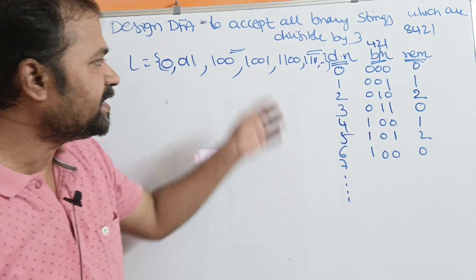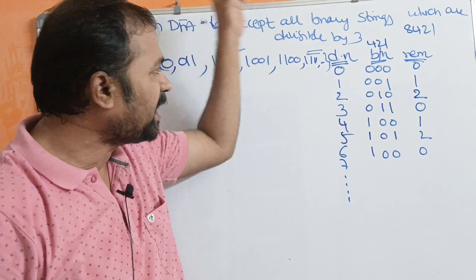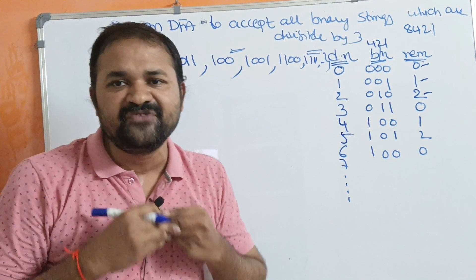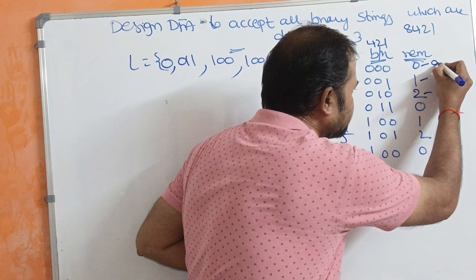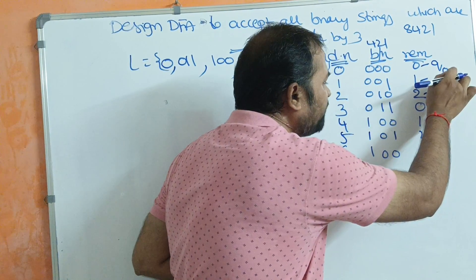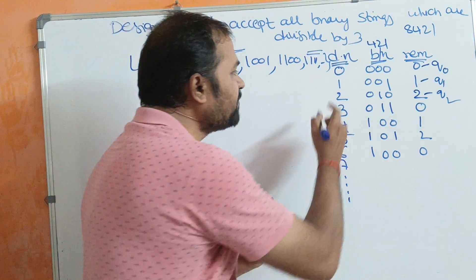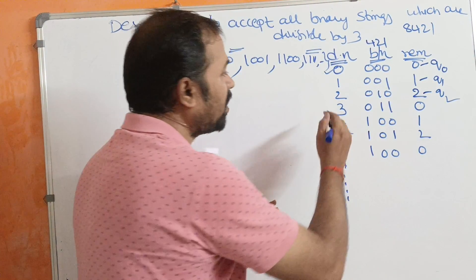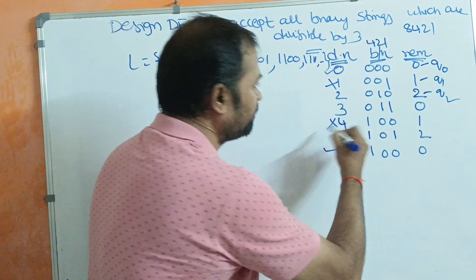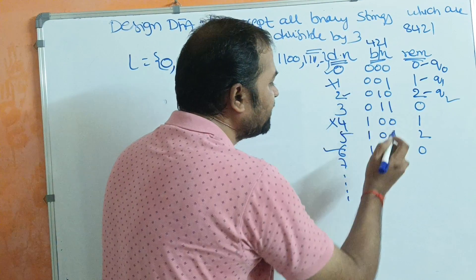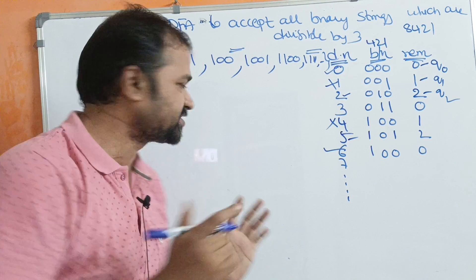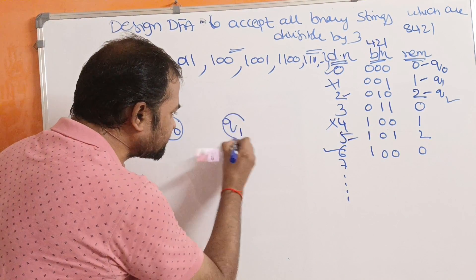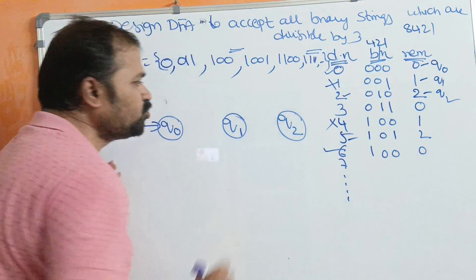If we divide any binary number by 3, the possible remainders are 0, 1, and 2. So we require 3 states: Q0, Q1, and Q2. Q0 is for accepting remainder-0 binary numbers — those are 0, 6, 9, 12, 15. Q1 is for remainder-1 binary numbers, such as 1 and 4. Q2 is for remainder-2 binary numbers, such as 2 and 5. So we have a total of 3 states, and the initial state is Q0.